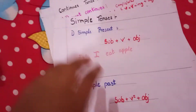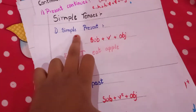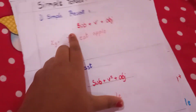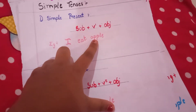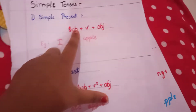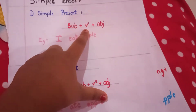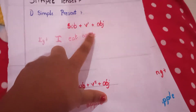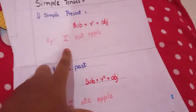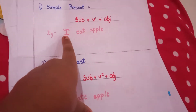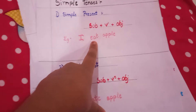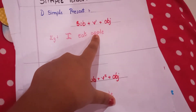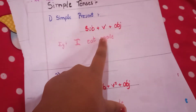First, simple tense — simple present. The formula is subject plus V1 plus object. For example: 'I eat apple.' Here 'I' is the subject, 'eat' is V1, and 'apple' is the object.